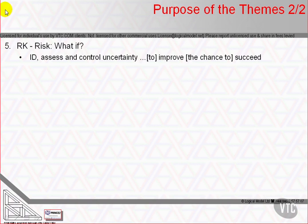There are seven themes and so far we've seen four of them. Fifth is risk. Projects typically entail more risk than stable operational activity. The risk theme defines risk and the steps of the risk management process that the activities of the processes embody. The theme explains how PRINCE2 integrates uncertainty into plans and manages risk in the project environment.